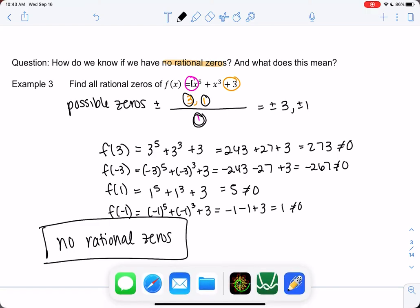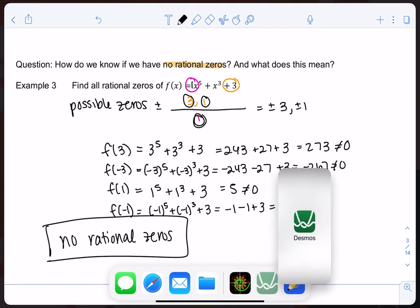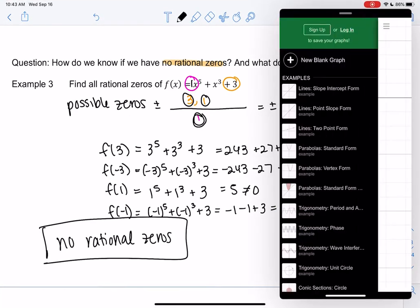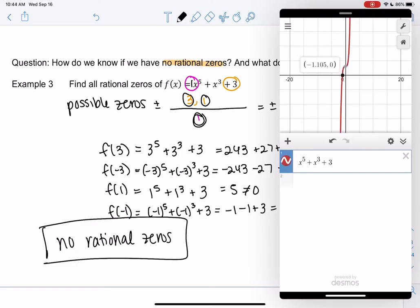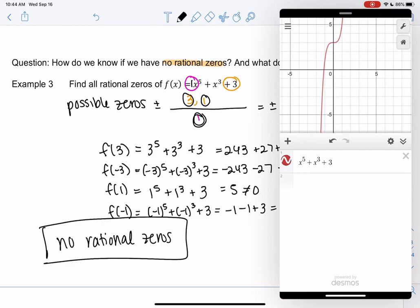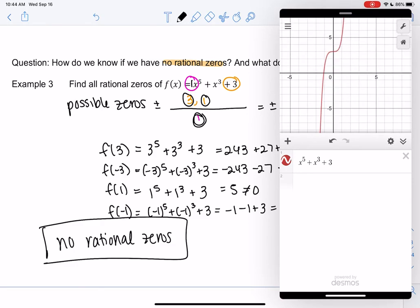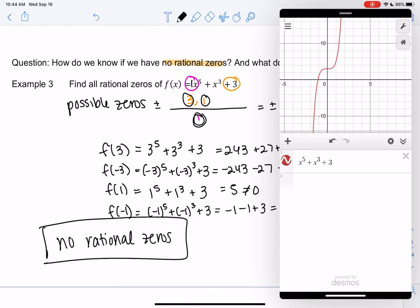So it probably has zeros, and we can check out Desmos. They're just not rational. So they might be imaginaries, or they might be complex. And so let's check it out. So x^5 + x^3 + 3. So it looks like maybe we have one that's irrational, right? That's just a decimal that goes on forever.